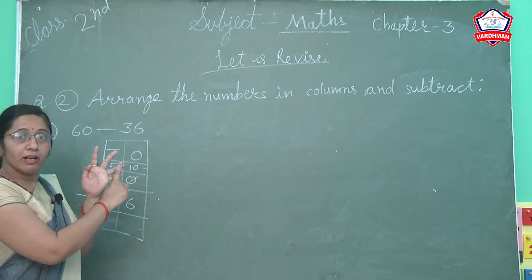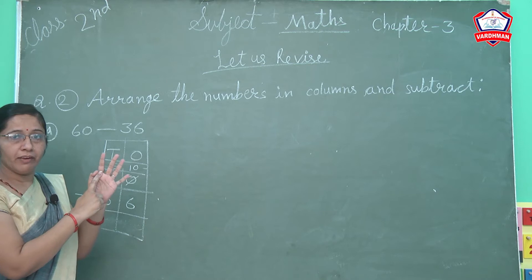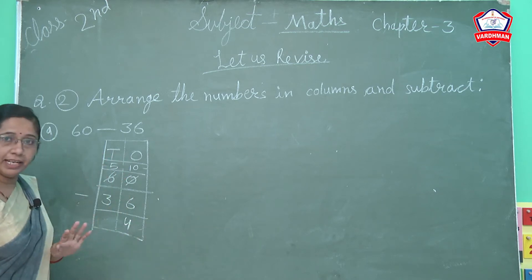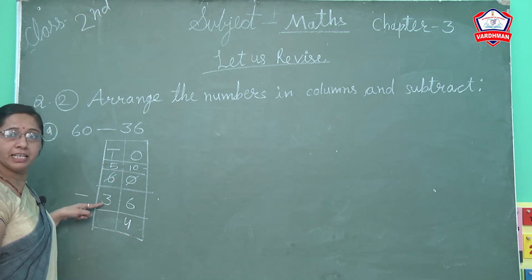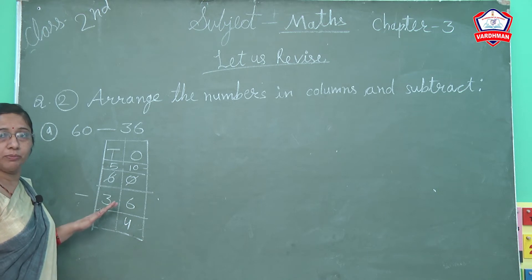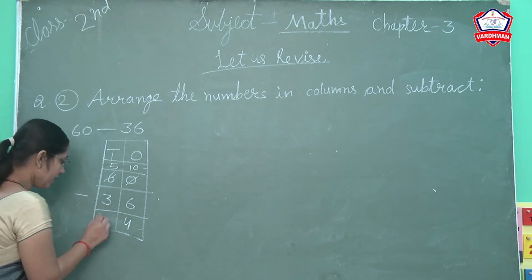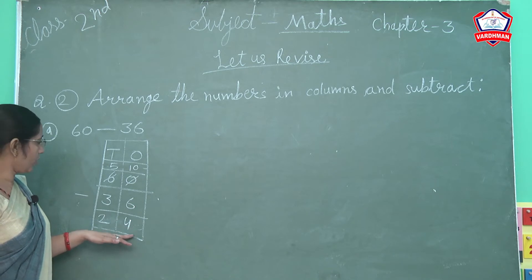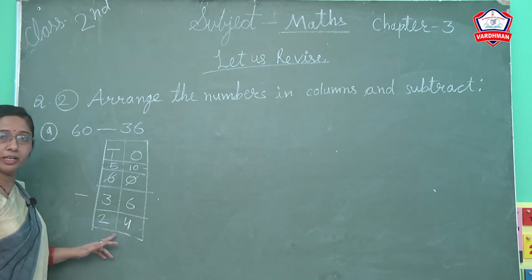6 is cut. Now count the left lines — 1, 2, 3, 4. How many left? 4. So write 4. Next digit is 5, we have to subtract 3. So 5 mein se 3 less karenge, toh pichhe kitne bachenge? 5 minus 3, 2 left. So write 2. The answer is 24. 60 minus 36, the answer is 24.